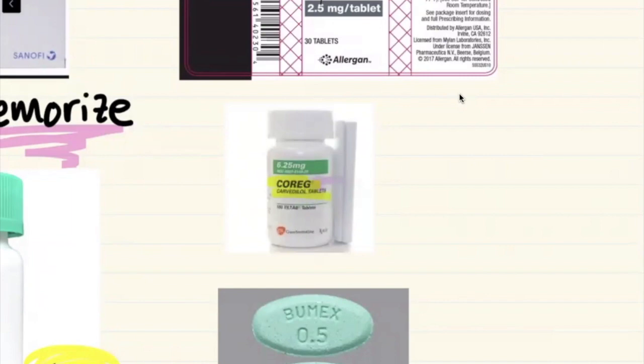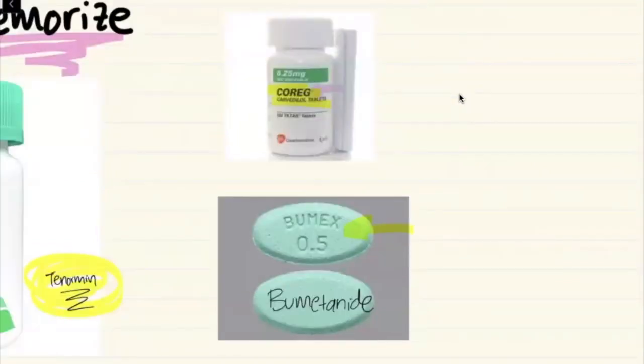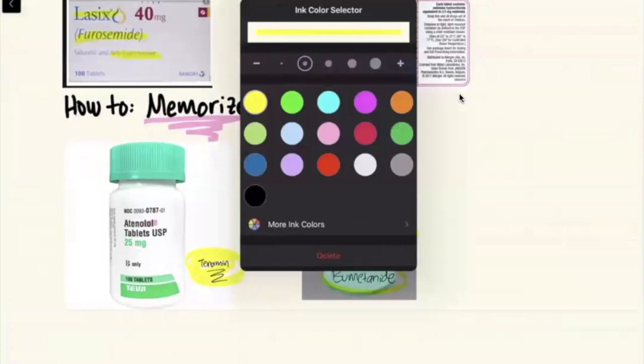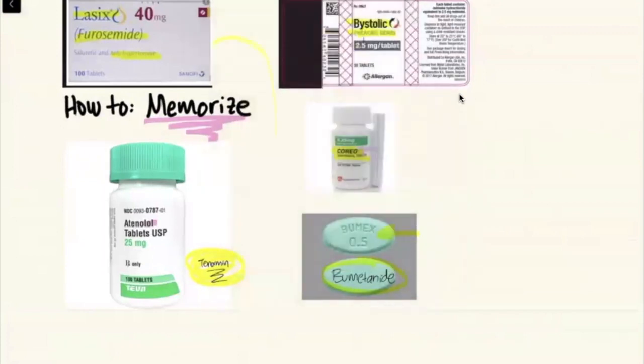Just looking at the tablet and visualizing Bumex, then I could test myself or even write it out like I have, like I did here, and now I know that Bumex is the brand name for bumetanide. Now I can make an association between Lasix and bumetanide because these are both loop diuretics, and so I can start to associate these two together. So Lasix sounds like Bumex, furosemide sounds like bumetanide.